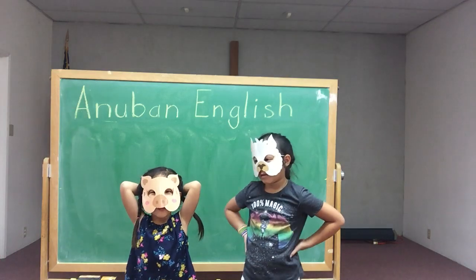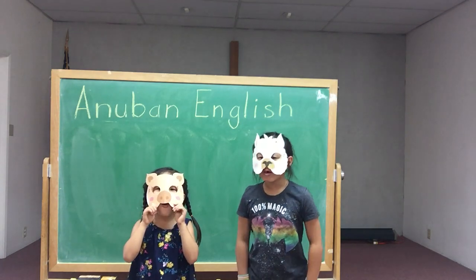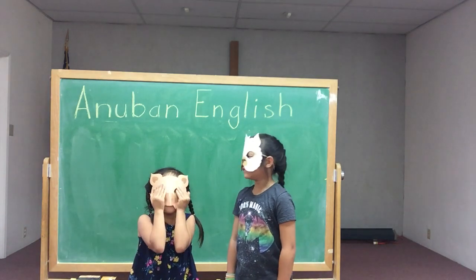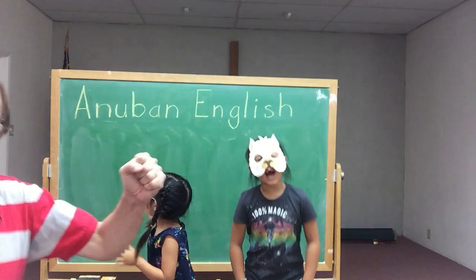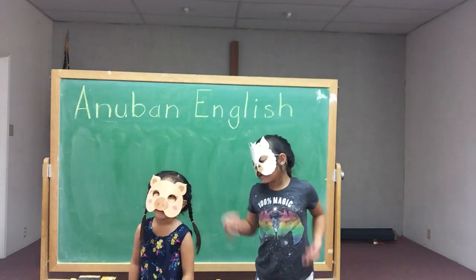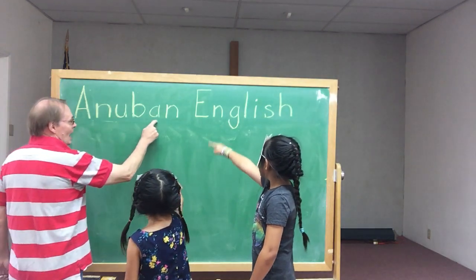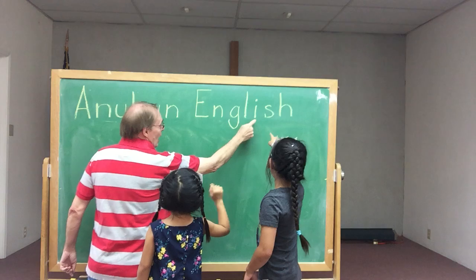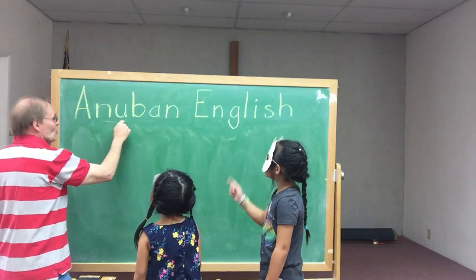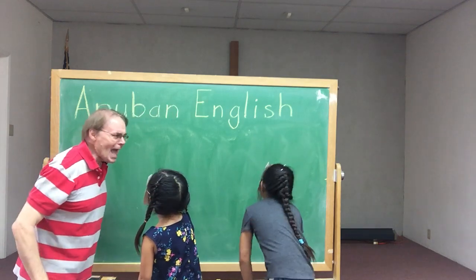The pig goes... How's the pig go? Oink, oink, oink. And the wolf goes... Okay, pig and wolf, it's time for Anuban English! Anuban English. Let's do the letters now: A-N-U-B-A-N-E-N-G-L-I-S-H. One more time: A-N-U-B-A-N-E-N-G-L-I-S-H. Boom.